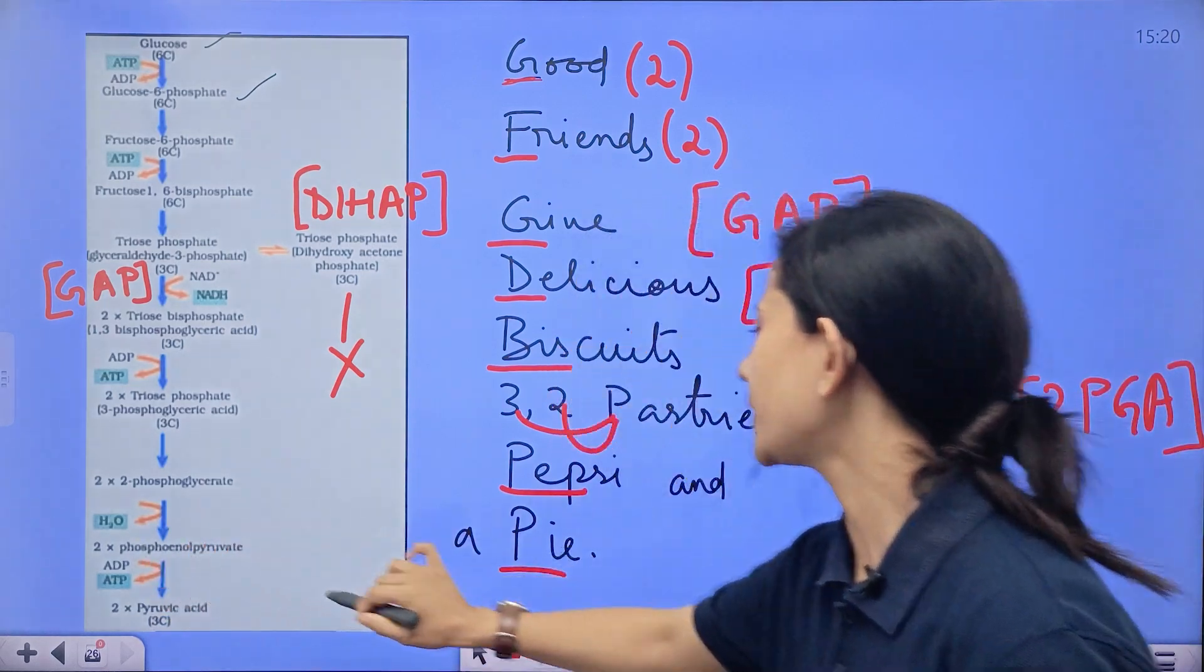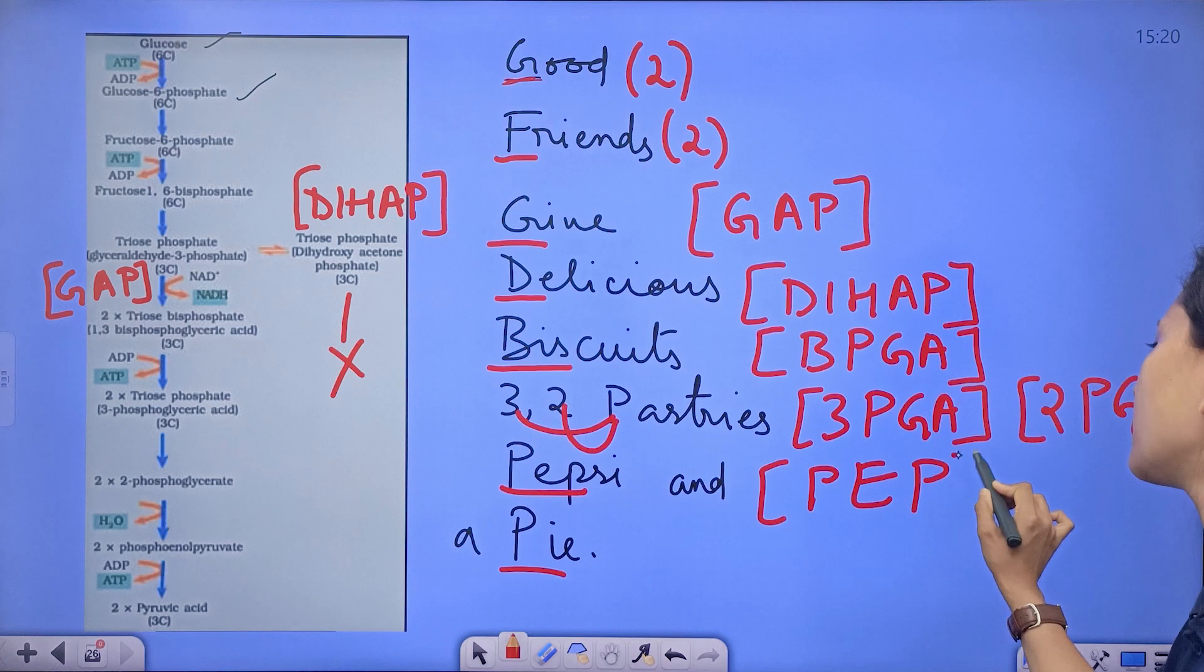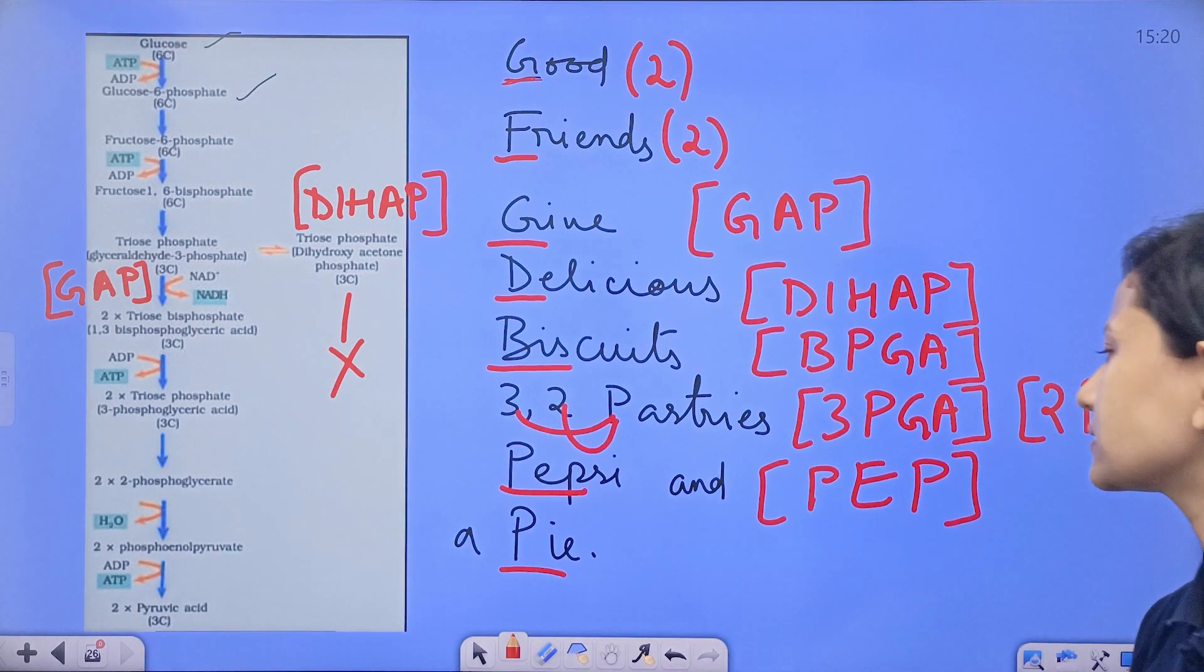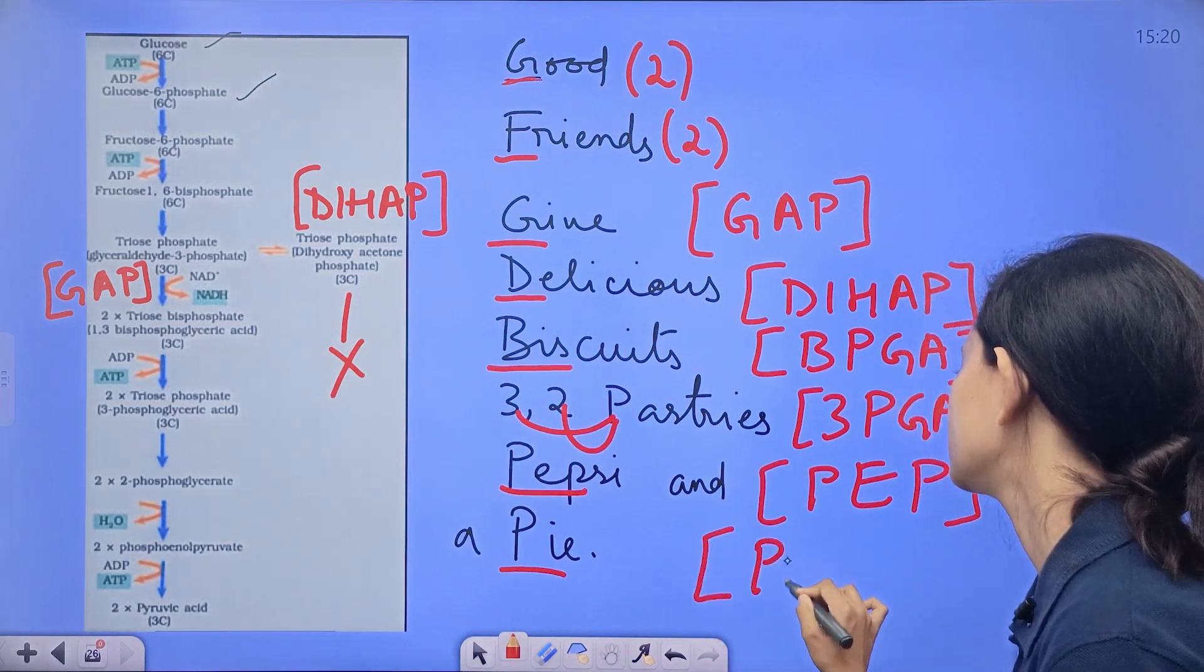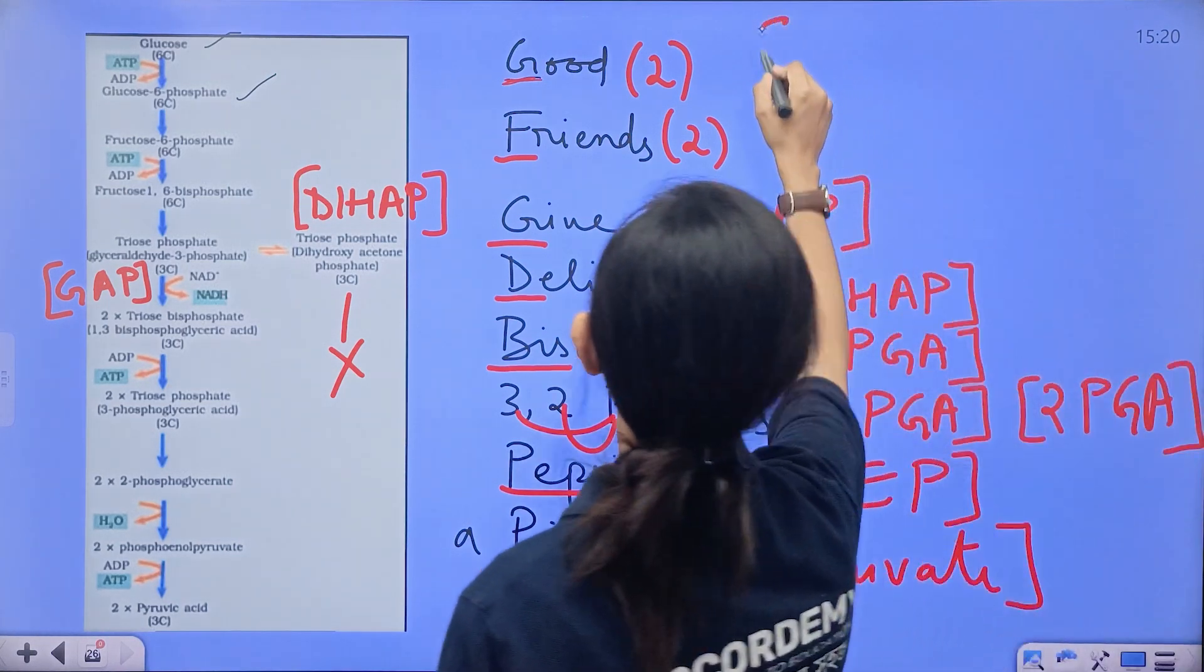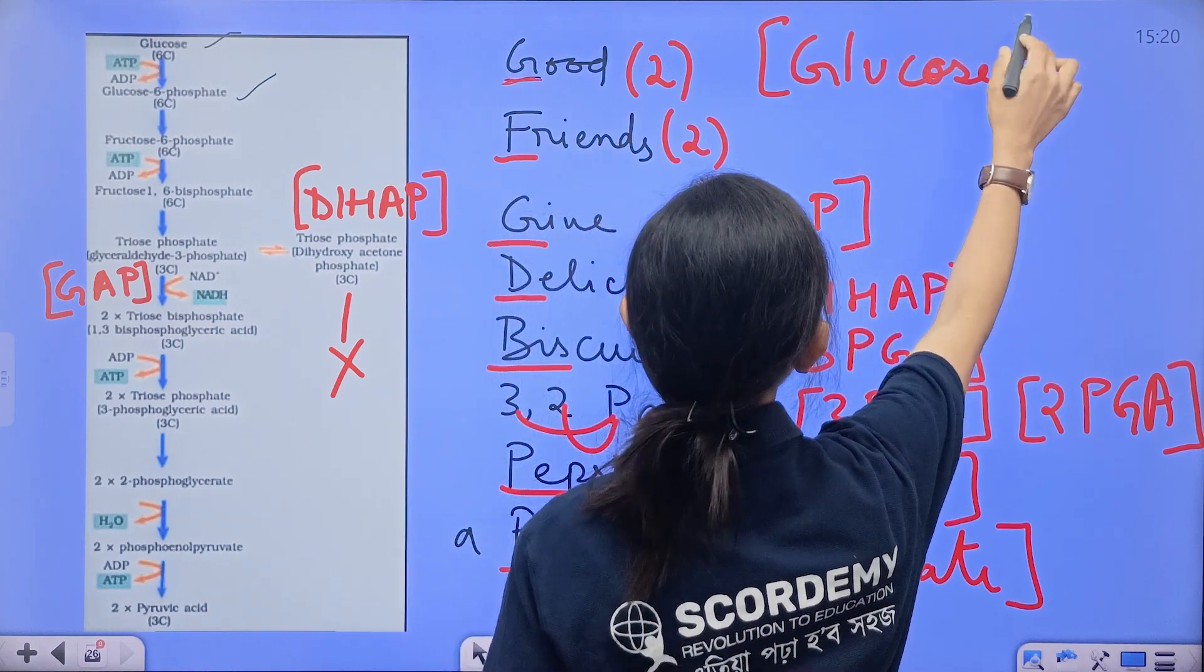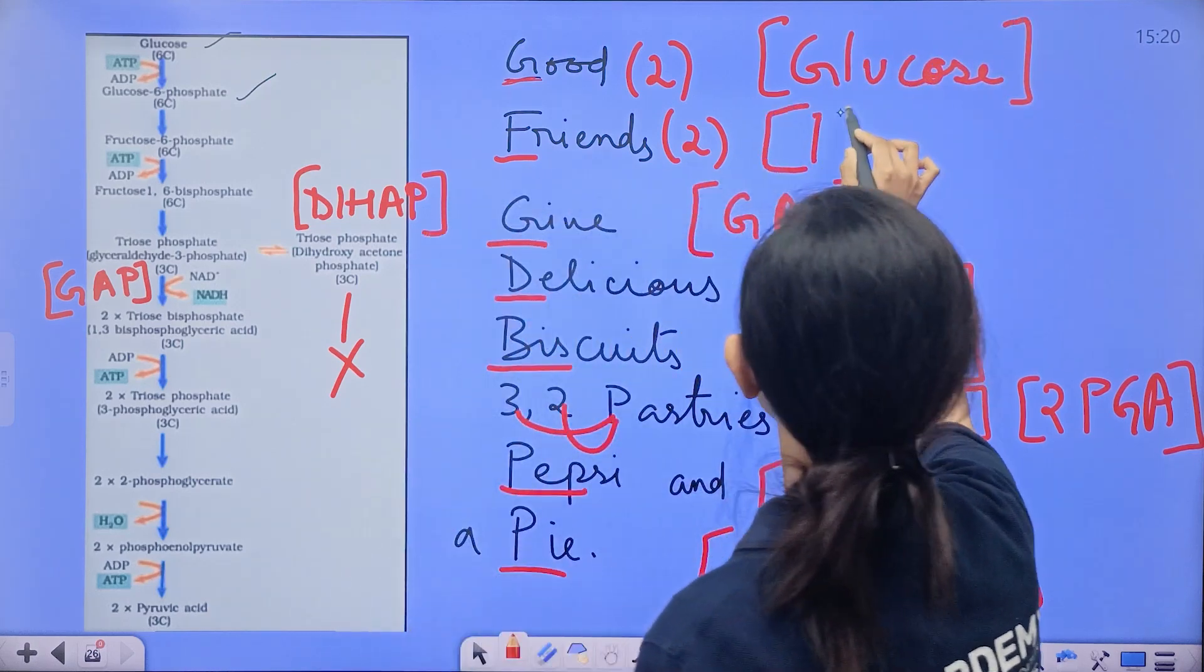Then this 2PGA breaks down into phosphoenol pyruvate. Phosphoenol pyruvate, we can shorten to PEP. That is Pepsi. And the last compound is pyruvate. Got it? Two compounds start with glucose, the other compounds start with fructose. That's become easy for us to remember the whole cycle.